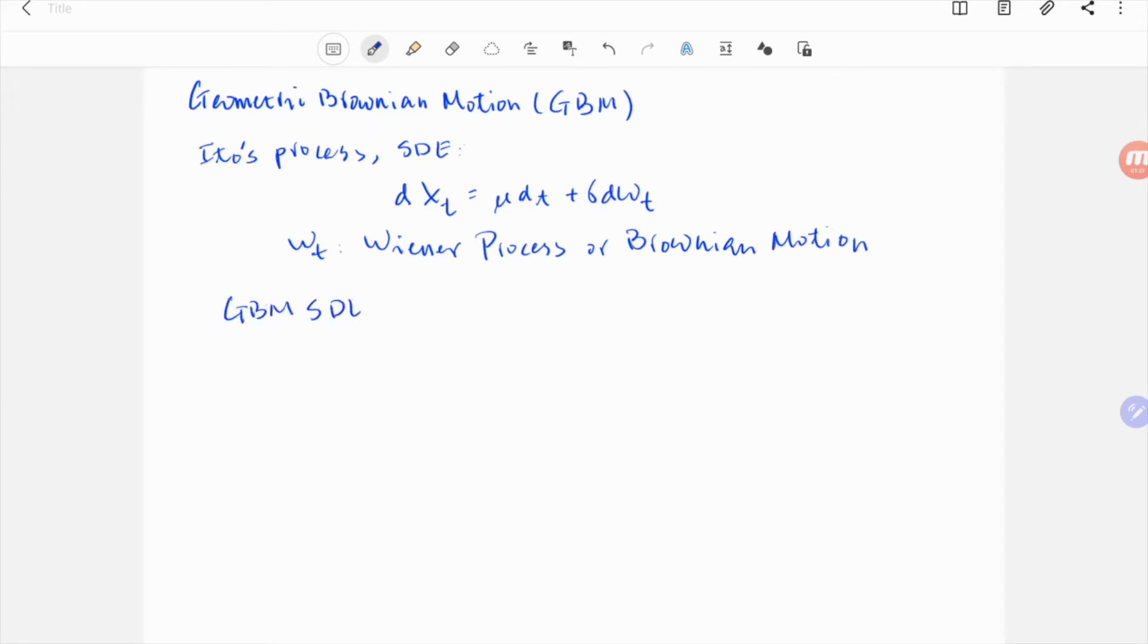Now, looking at Geometric Brownian motion SDE, the difference is instead of dxt, the left-hand side is dst over st, which gives it geometric characteristics.